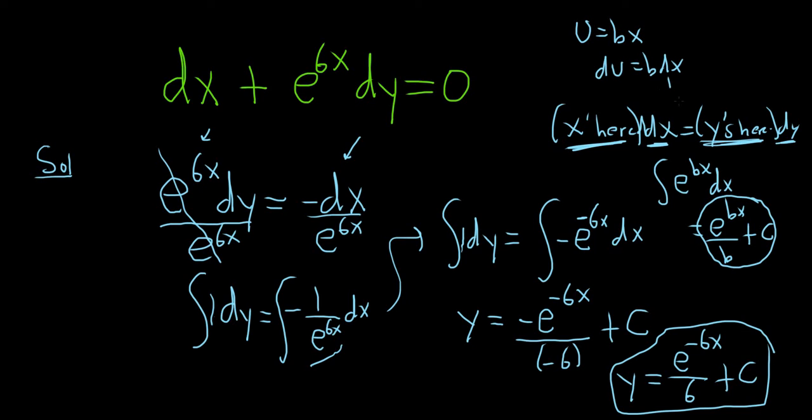And then so du would be equal to bdx. And here's the key: you would divide by b. So you would get 1 over b du equals dx. So you would take this integral here and rewrite it as 1 over b integral of e to the u du. And then you just integrate it. You just get e to the u plus c, and then you just replace it with bx.